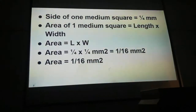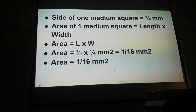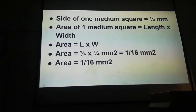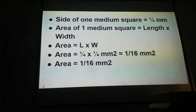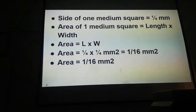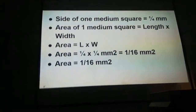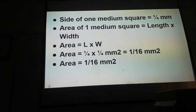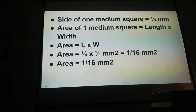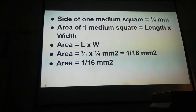The side of 1 medium square is 1/4th of a millimeter, because the side of 1 big corner square is 1 mm. That 1 big corner square when divided into 4 smaller squares on each side gives a side of 1/4th mm for 1 medium square. The area of 1 medium square is calculated as length × width of the medium square.